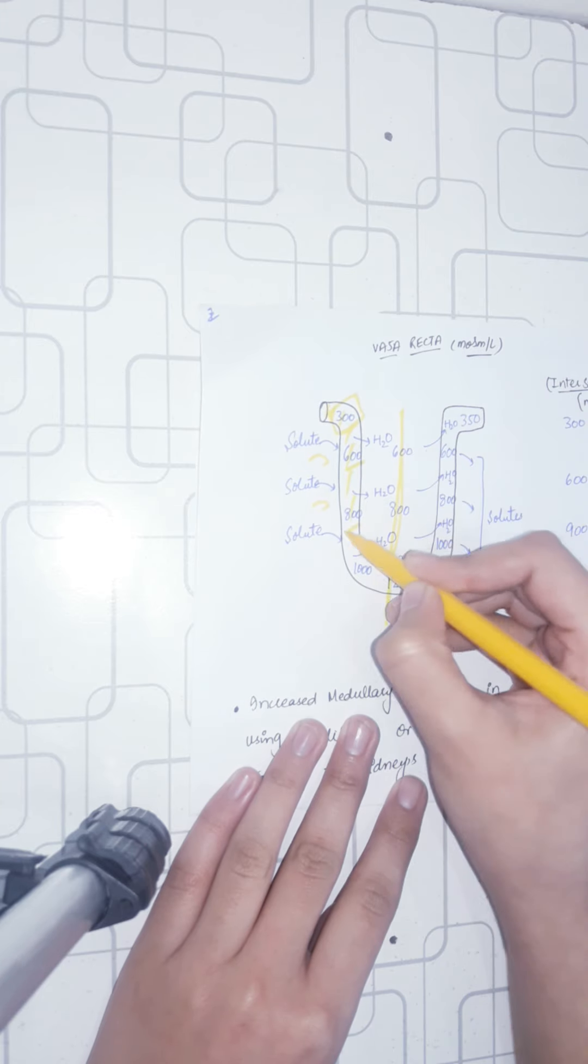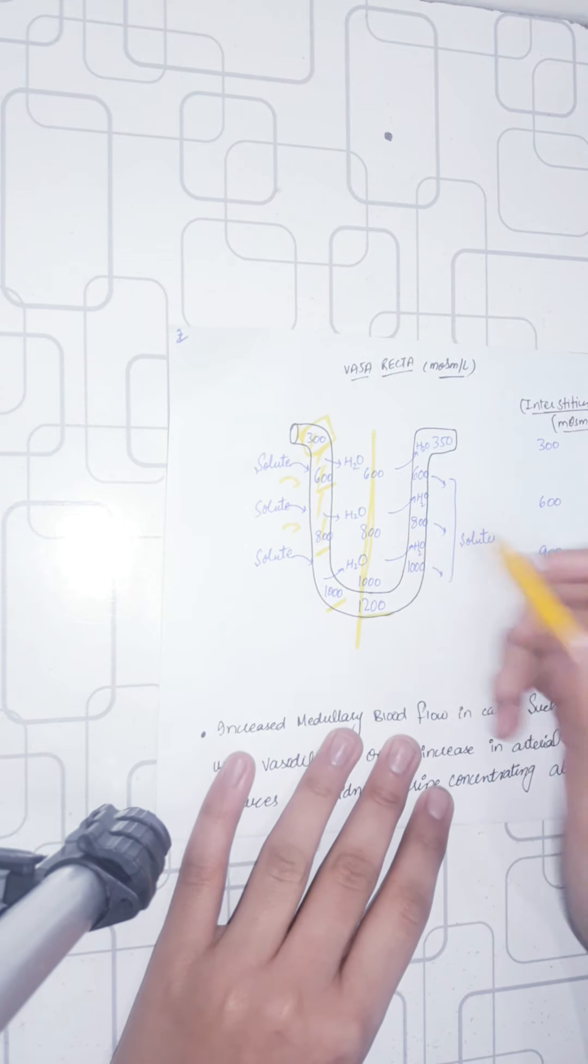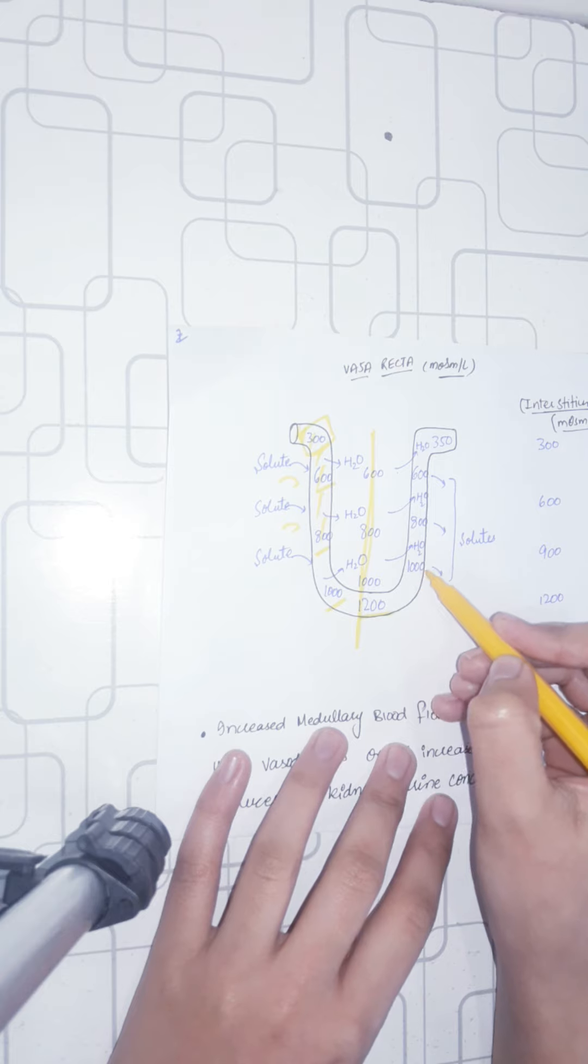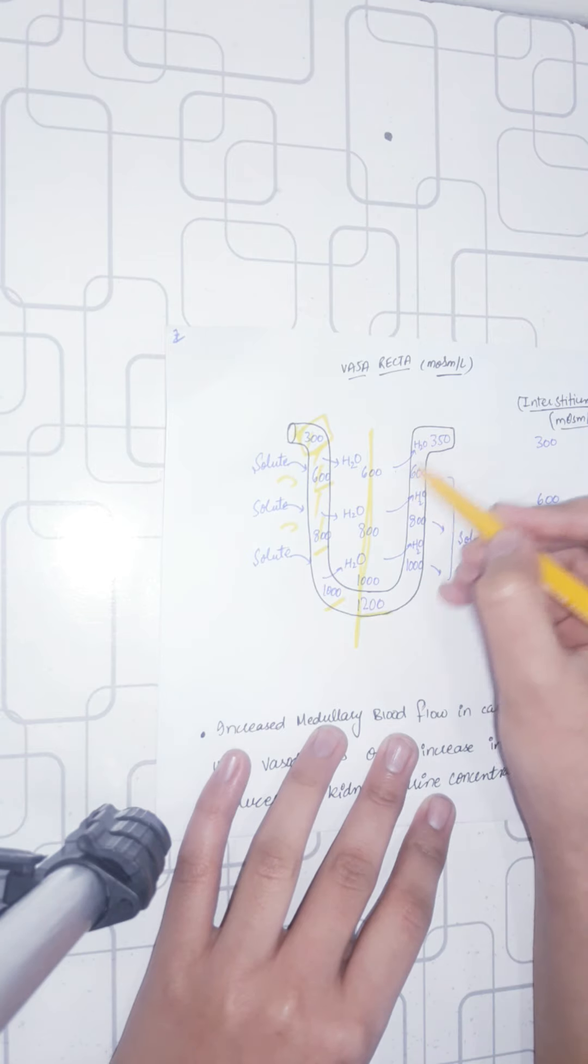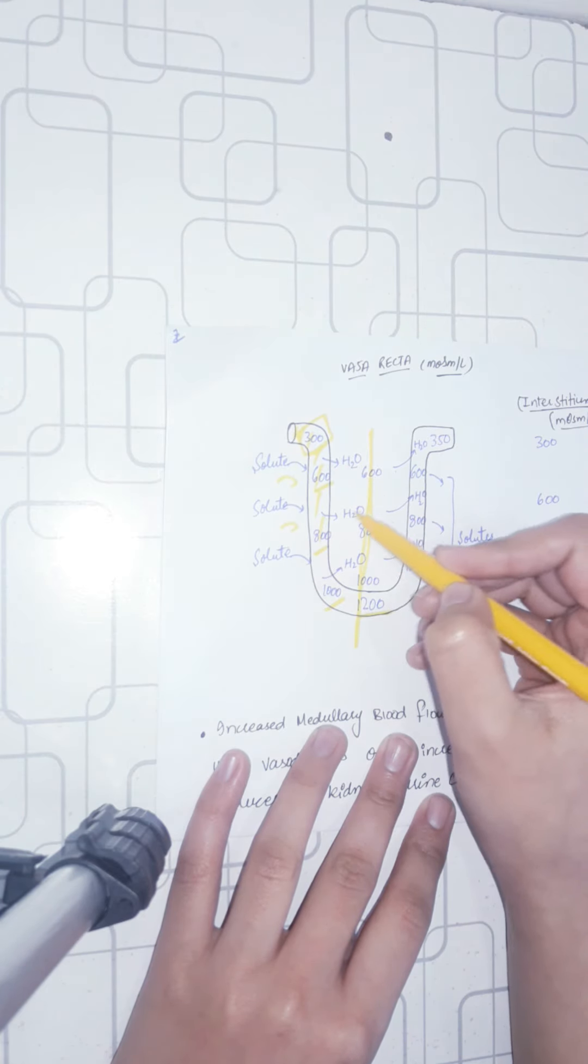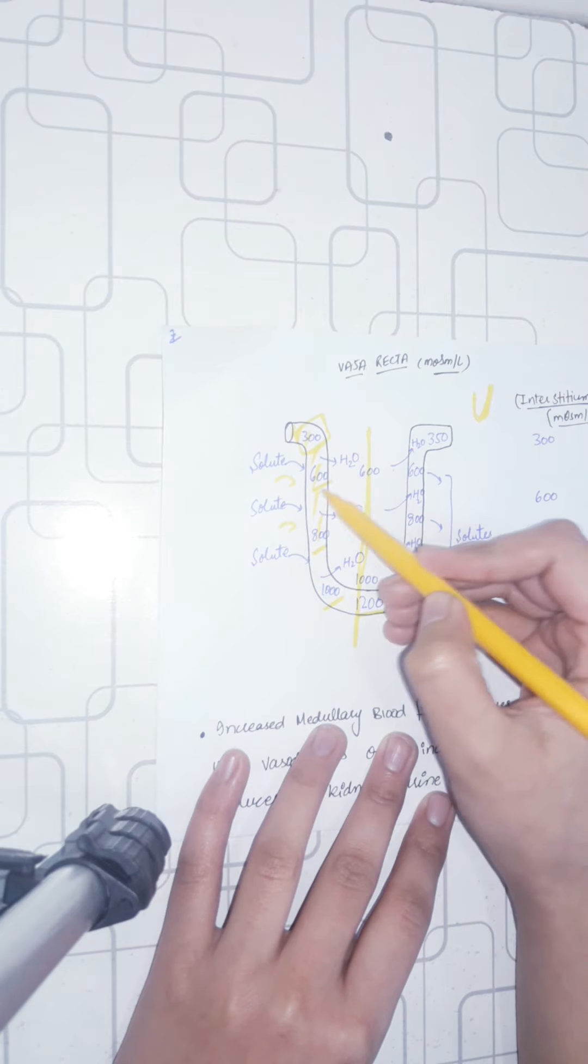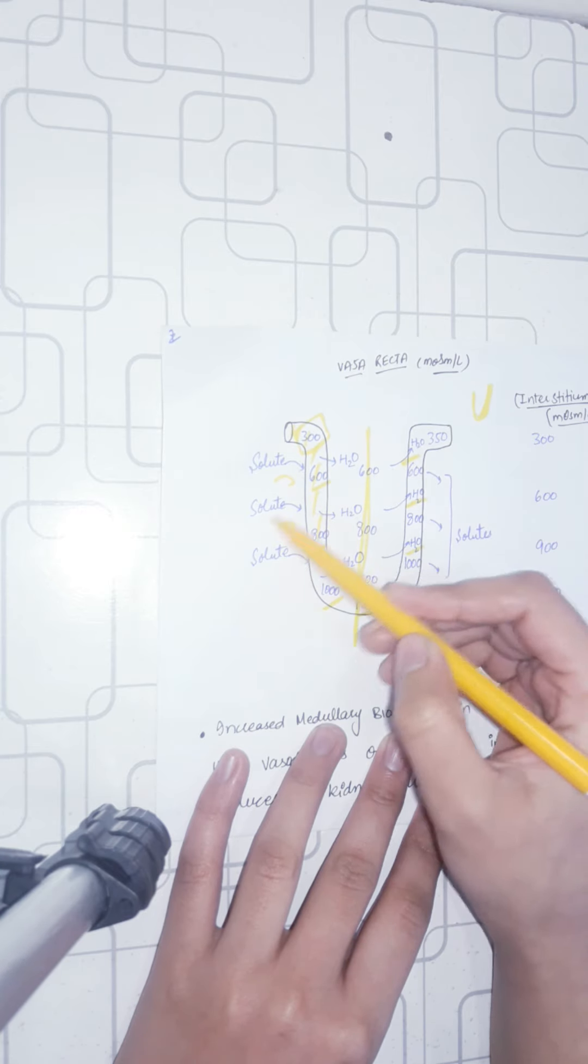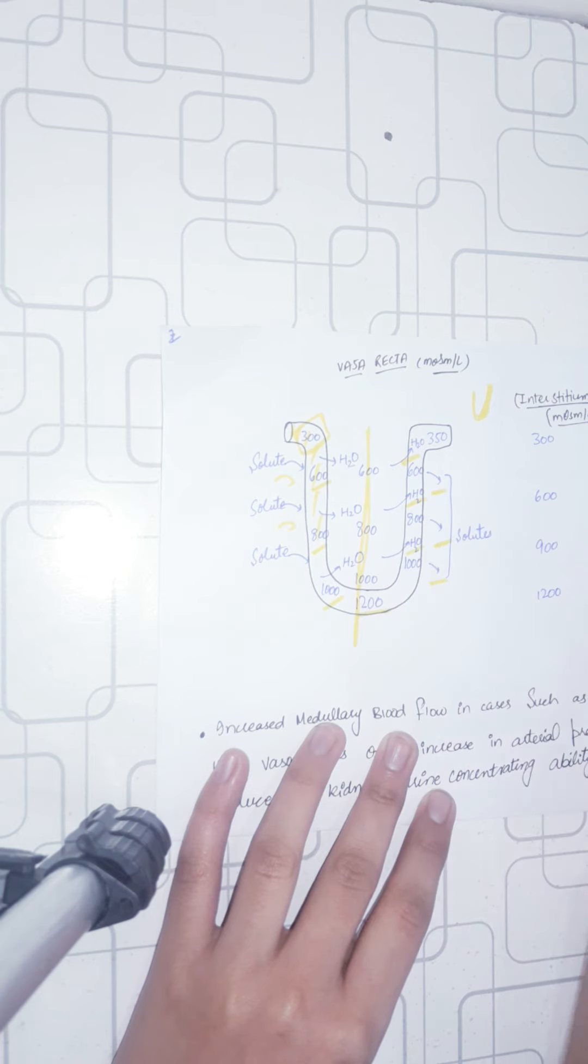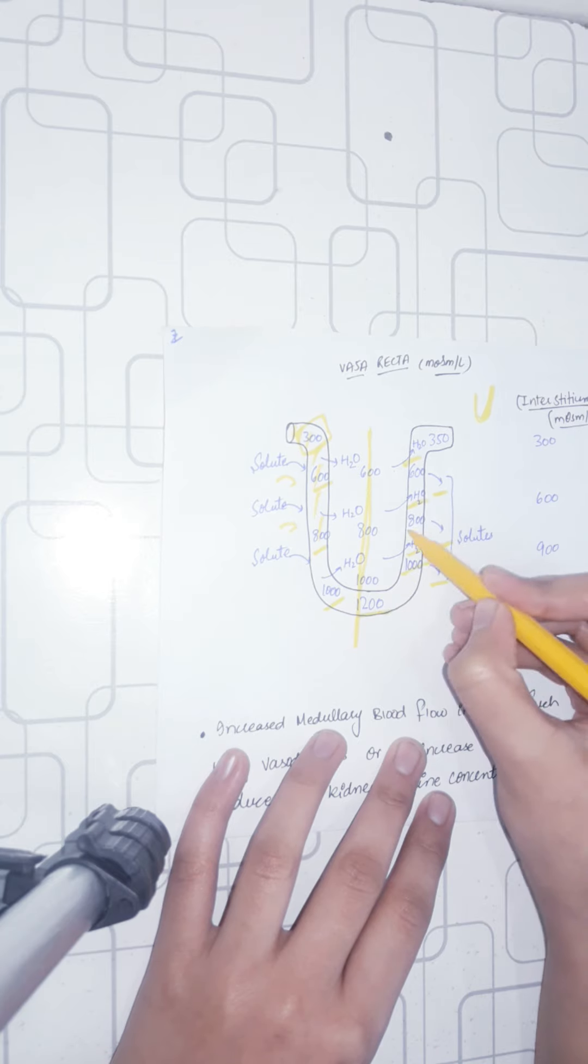From 300, it becomes 800, 1000, or at the tip it becomes 1200. In the ascending limb, what happens? The water that goes out will come back into the vasa recta. As water exits the vasa recta into the interstitium, but when it goes up in the upper loop, the water that was lost into the interstitium is reabsorbed again and again. The solute will go back into the interstitium.